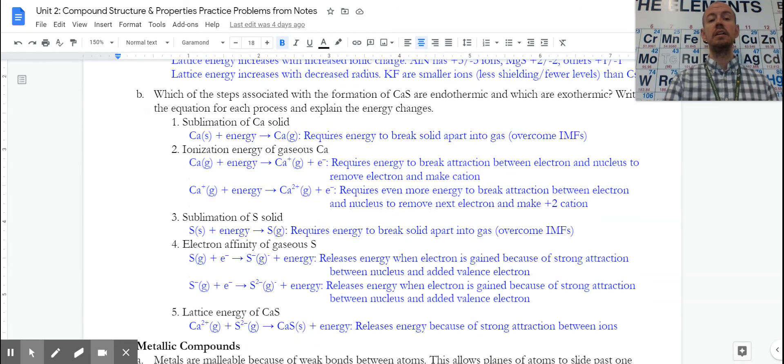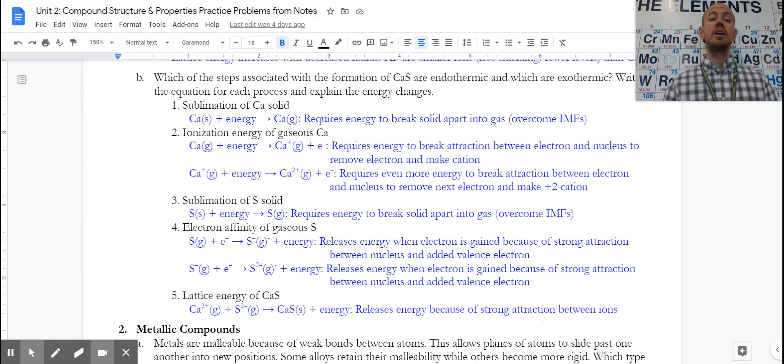Sulfur is also a solid, so we would need to change its state. We would need to sublime it to overcome those IMFs. And then this gains electrons. The electron affinity isn't always super clear whether it's endo or exo, and it varies in different instances. But in general, we say things with a high effective nuclear charge or a high Z-effective release energy as they gain electrons. So sulfur is able to gain one, two electrons, and it may release some energy in doing that, even if it's slightly endothermic or one of these two is endothermic. Overall, it's probably more favorable.